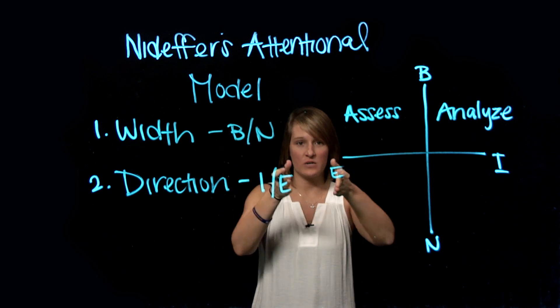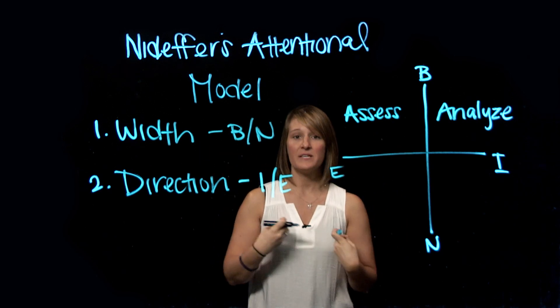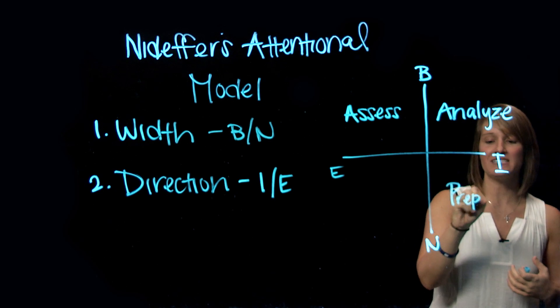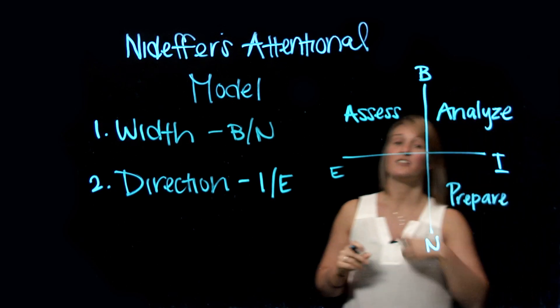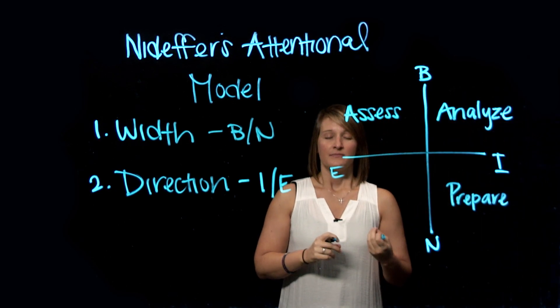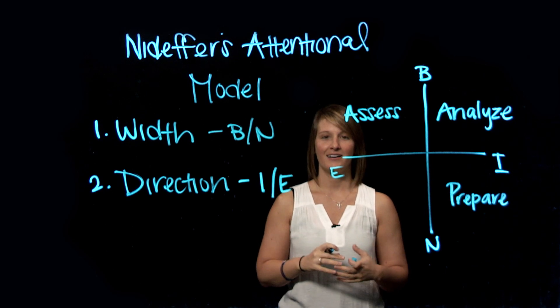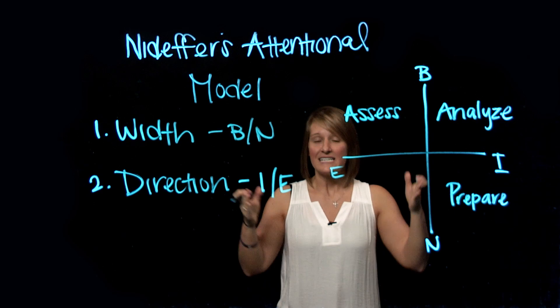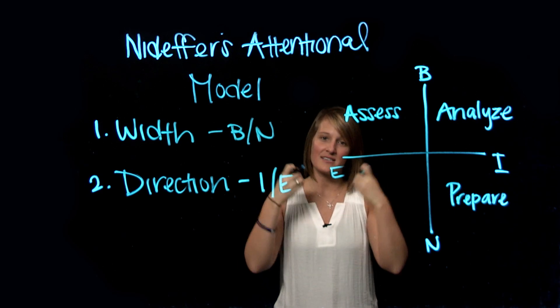So remember, narrow is coming in. It's zoning in on one or two things, but staying internal. And at this point, it said that we're preparing. So an example might be focusing on just your breath. It might be focusing on your heart rate, focusing on your thoughts. It's zoning in on one or two things inside you.